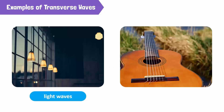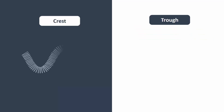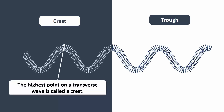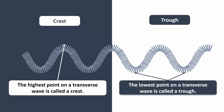Light waves and vibrations in strings are examples of transverse waves. This bump on top — the highest point on a transverse wave — is called a crest. This bump at the bottom — the lowest point on a transverse wave — is called a trough.